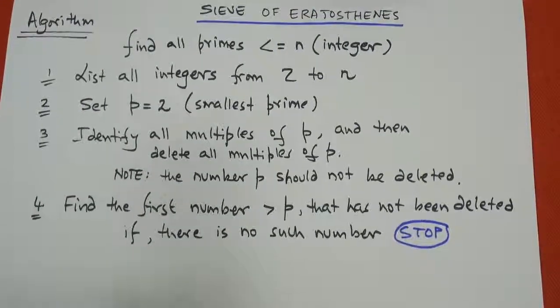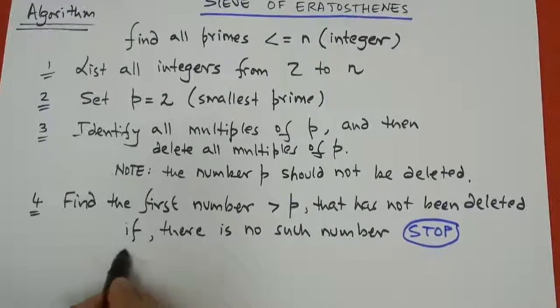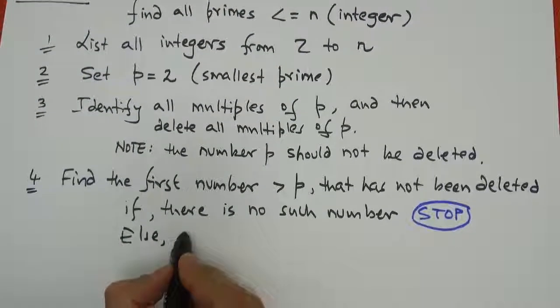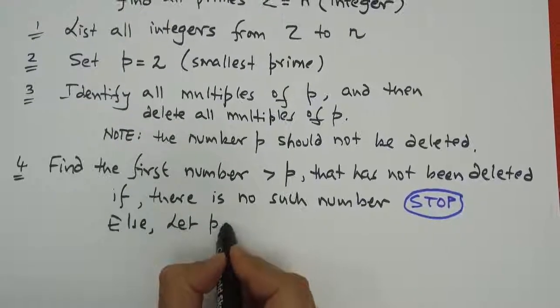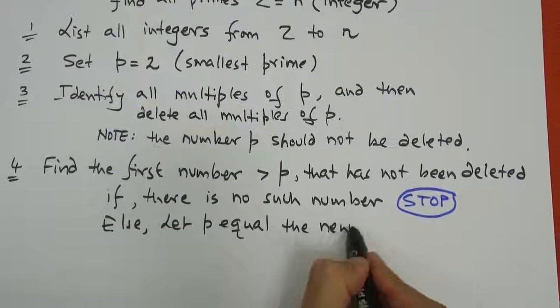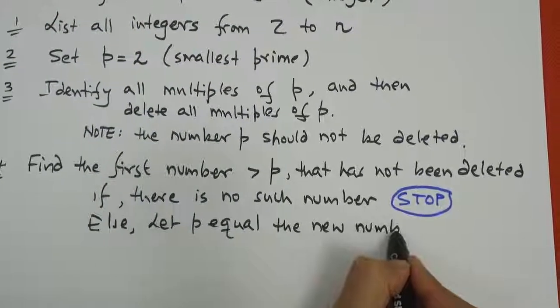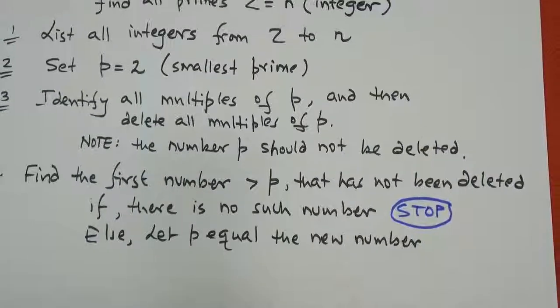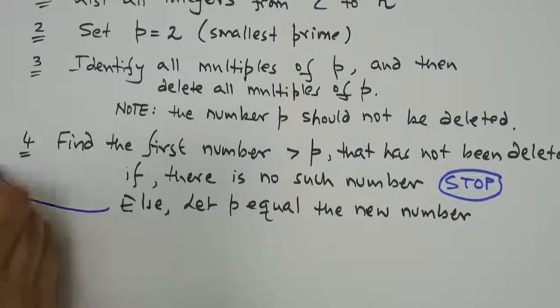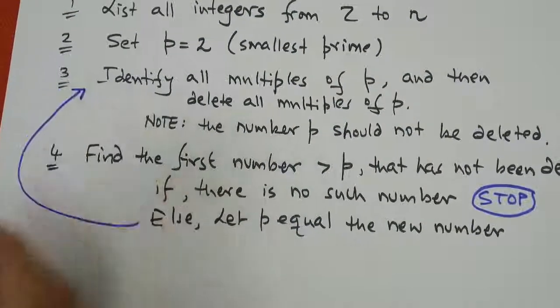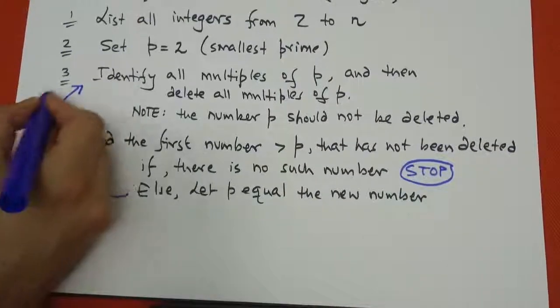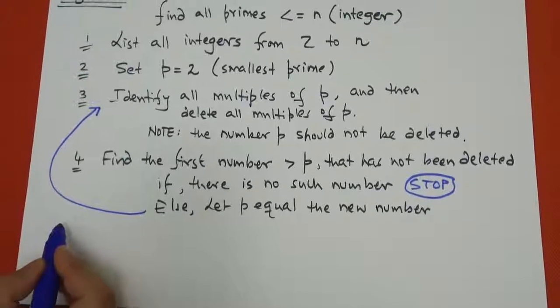Else what we do is let p equal the new number. And if that is the case then we go ahead and repeat from stage 3. So if we come here then we go back and start again from step number 3. So we repeat from step 3.